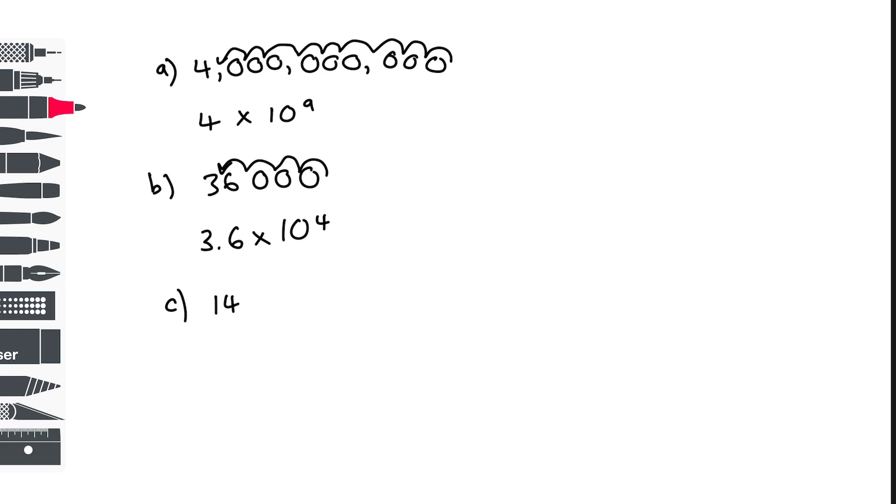In example C, we're looking at 14.3 million, or 14 million 300,000. Again, we need a number between 1 and less than 10. Count the number of decimal places: 3, 4, 5, 6, 7, and that's why our final answer is times 10 to the 7.